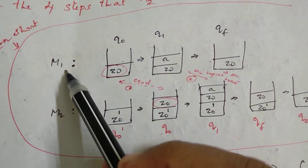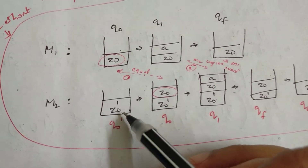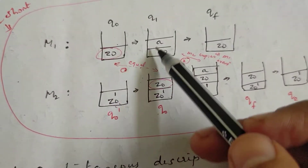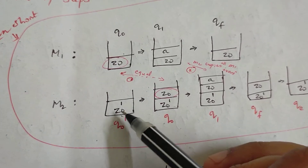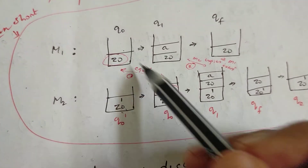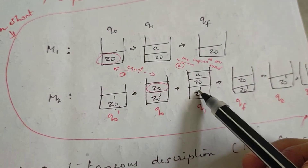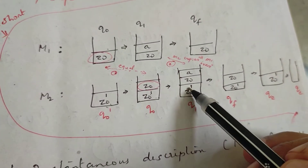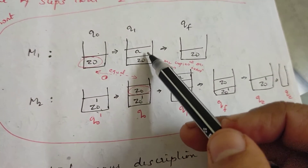So we apply z0 and z0-prime to M2. M2 copies all transitions of M1. We push z0 to the top of the stack initially. M2 copies the same transitions. In M2, the final state transitions lead to qe, consuming all remaining input and stack elements.